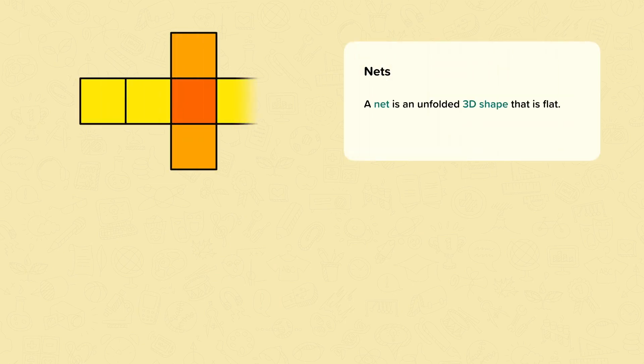A net is an unfolded 3D shape that is flat. A 3D shape can be made from different kinds of nets.